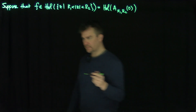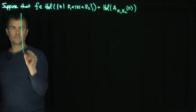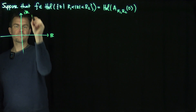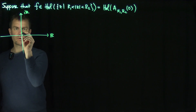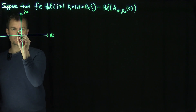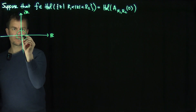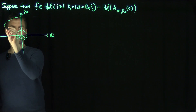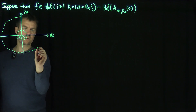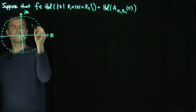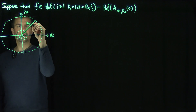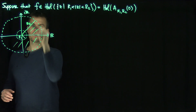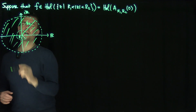So what does this region look like? Here's the complex plane — there's the real axis, there's the imaginary axis. The function is holomorphic, so I'm going to make R1 relatively small, and then R2 very large, with an intermediate radius in between. The function is holomorphic in this annulus — this ring over here.